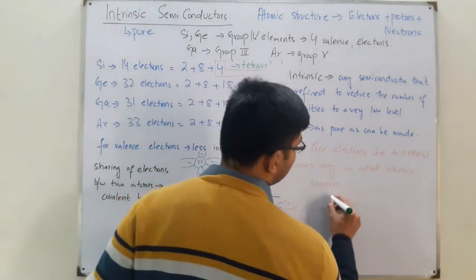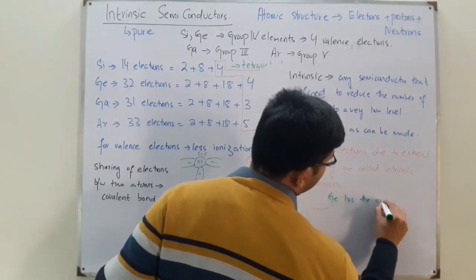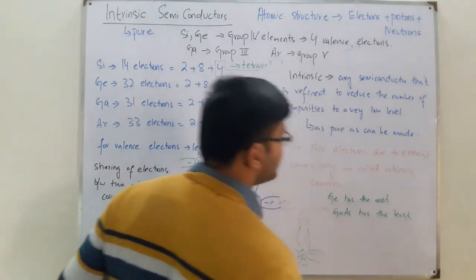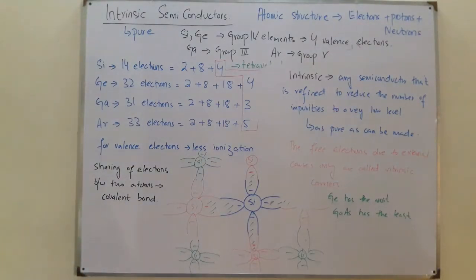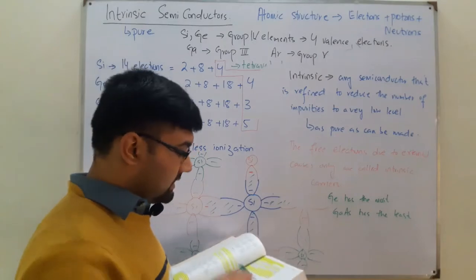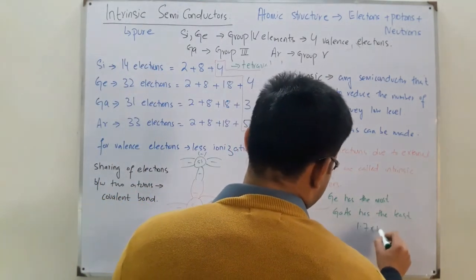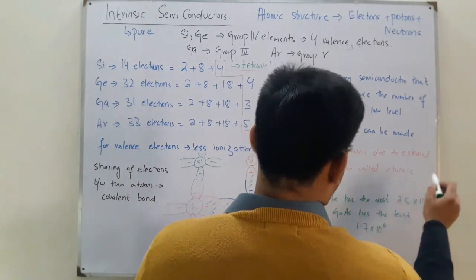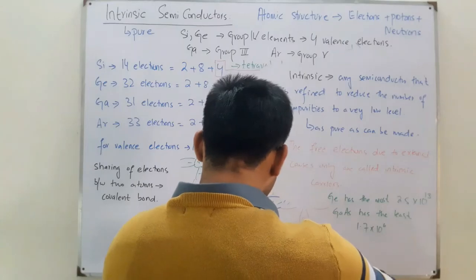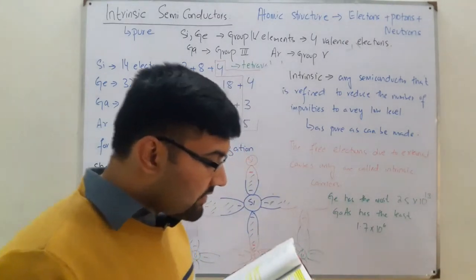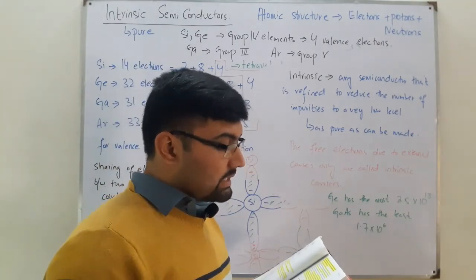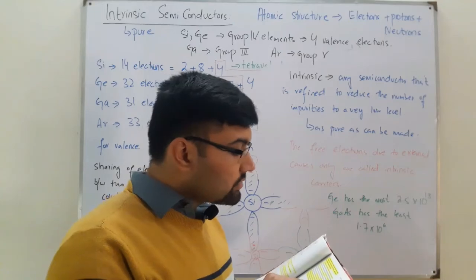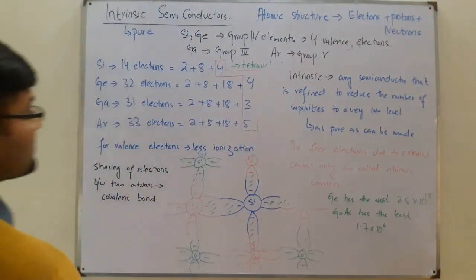It's written in the book that germanium has the most number of intrinsic free carriers, whereas gallium arsenide has the least — the figure is 1.7 × 10⁶ for gallium arsenide and 2.5 × 10¹³ for germanium. Another important characteristic is relative mobility (μₙ), which is the ability of free carriers to move throughout the material.